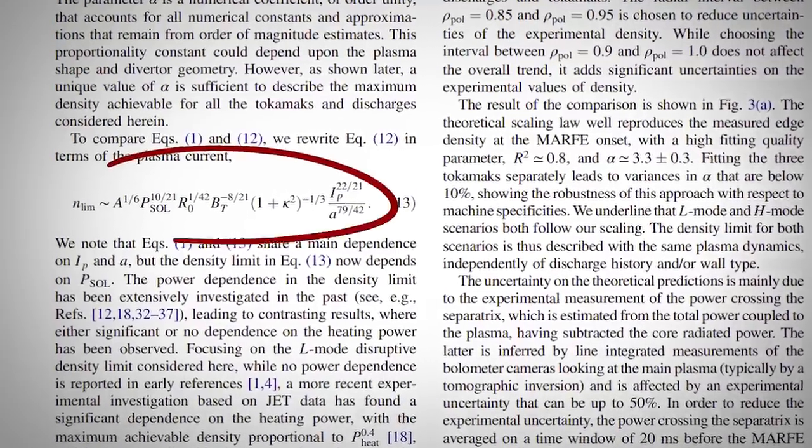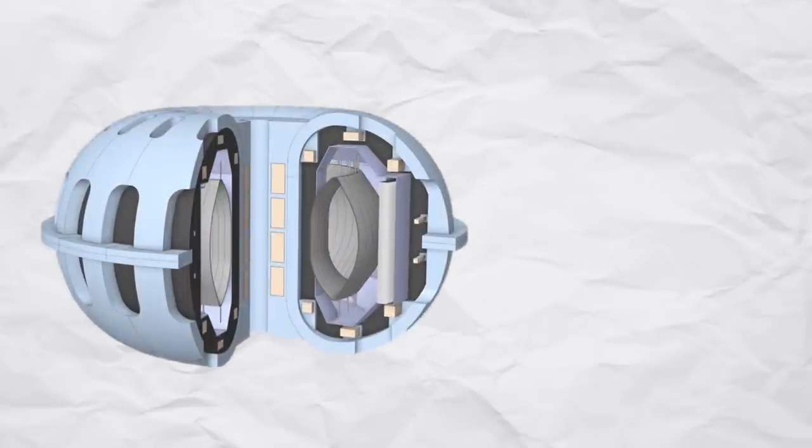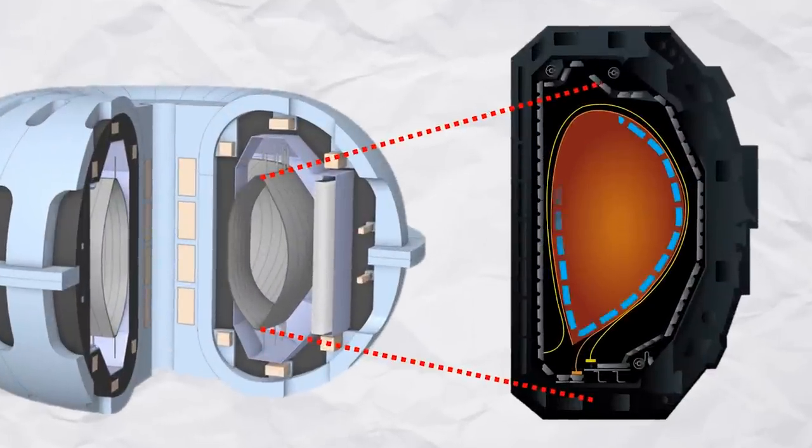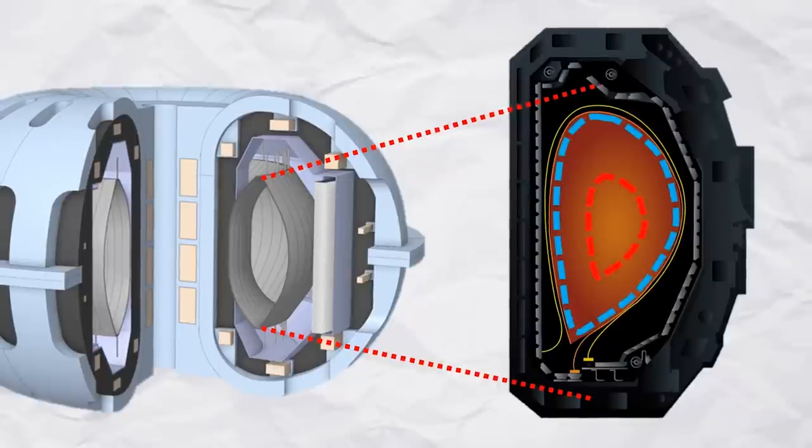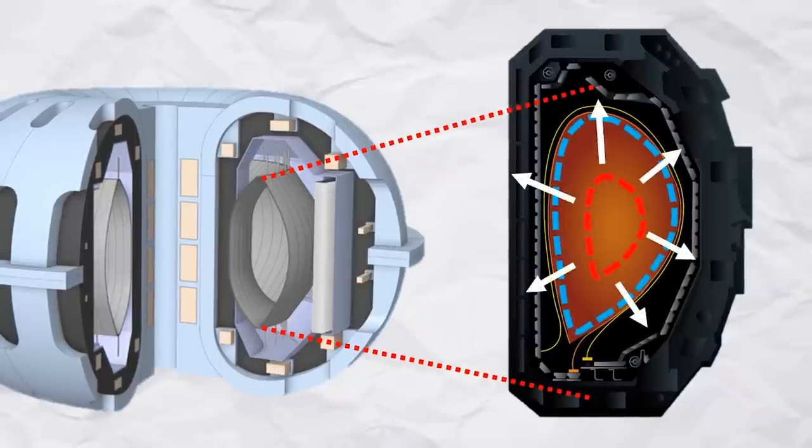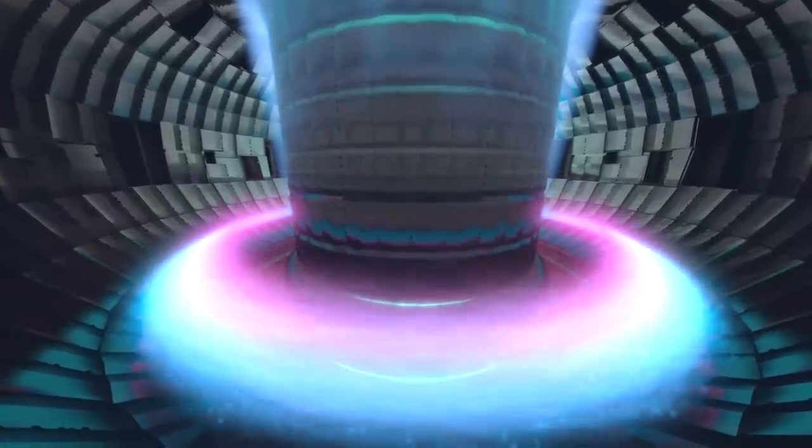So the reason we have this ion fuel density limit in the first place is because if it gets too high, the plasma will collapse. As we increase the density, the plasma on the outside cools down, and because cold plasma is less dense than hot plasma, it causes pressure to build up. This disrupts the magnetically confined plasma altogether.